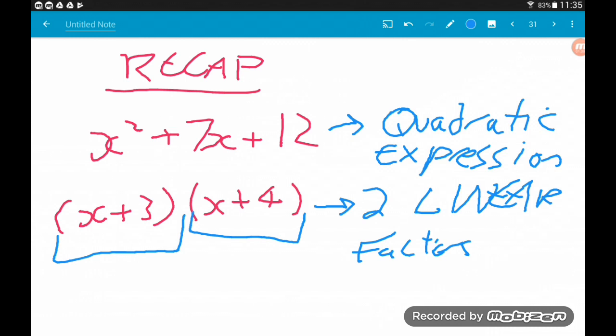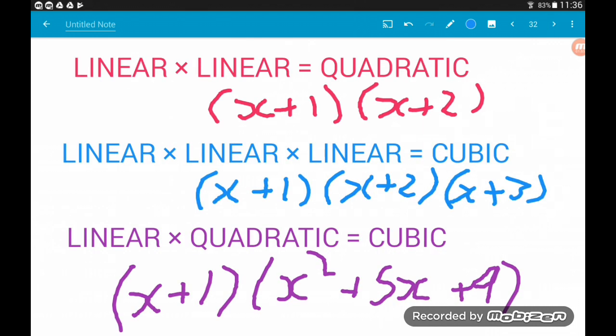They are linear because the power of x in there is just a 1. So anything where we just have an x term is called linear. When we've got a quadratic that can be written as two linear expressions being multiplied together, each of these is called a linear factor.